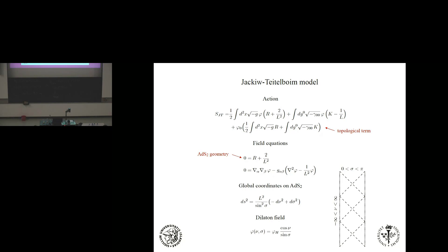A priori, from the one-plus-one-dimensional point of view, you might say: why do I need to add this topological term? It doesn't contribute to the dynamics. But we'll see that it gives important contributions to the thermodynamics of the black holes. Furthermore, looking ahead, what I will find is that this model on its own — as a one-plus-one-dimensional theory — is not going to realize these conjectures. You need to remember its heritage. This model can be derived by dimensional reduction, basically spherical reduction, usually starting from three-plus-one dimensions.